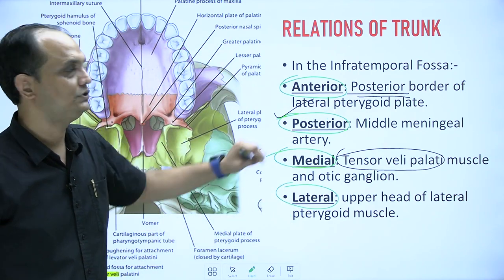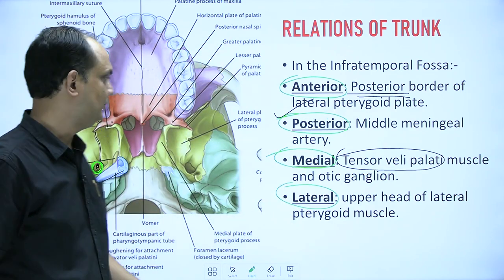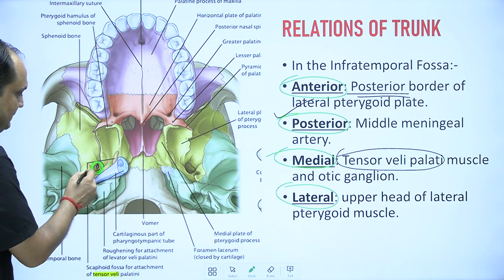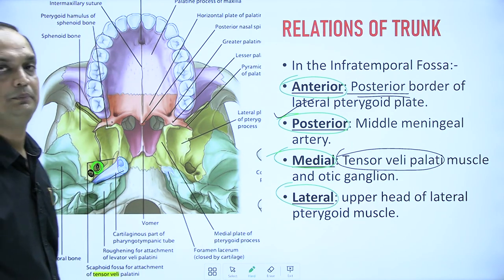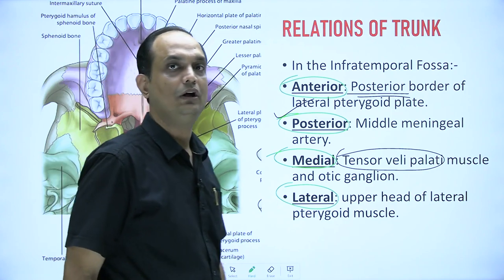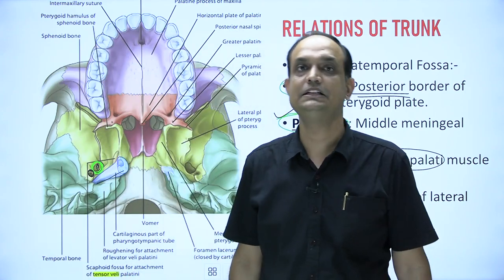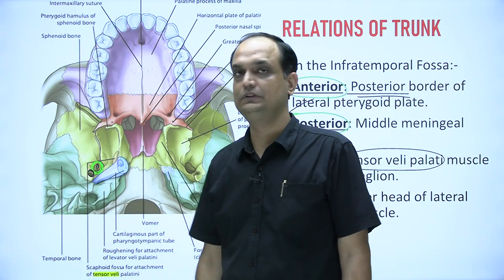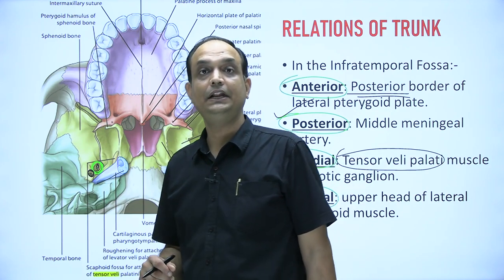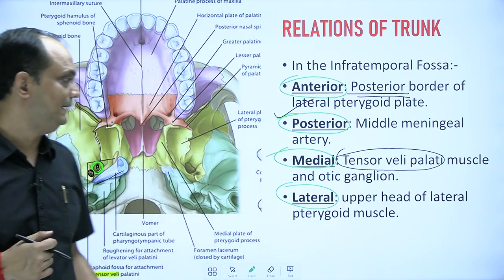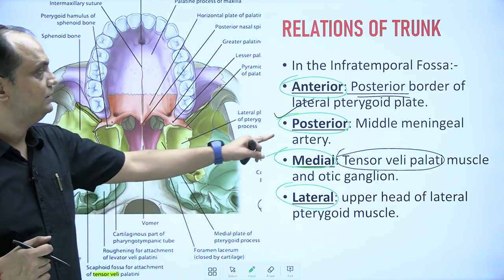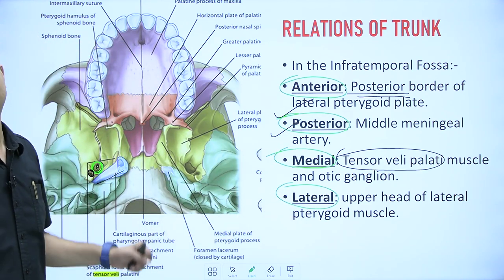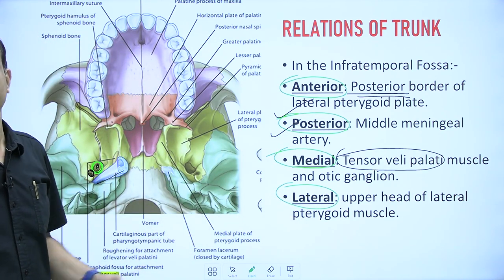The otic ganglion is also present medially and acts as a sandwich structure between the mandibular nerve and the tensor veli palatini muscle, so the otic ganglion is on the medial surface of the trunk and cannot be seen from the outer side. Anteriorly, there is the posterior border of the lateral pterygoid plate. Posteriorly, behind the foramen ovale, is the spinous process of the sphenoid bone with the foramen spinosum, through which the middle meningeal artery enters — making the middle meningeal artery the posterior relation of the mandibular nerve trunk.